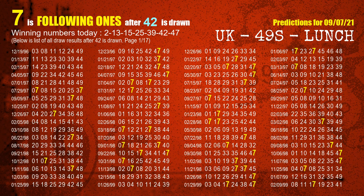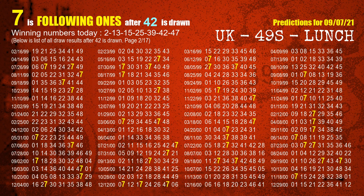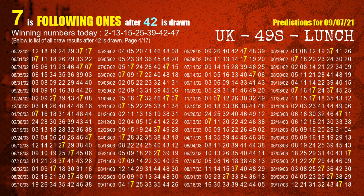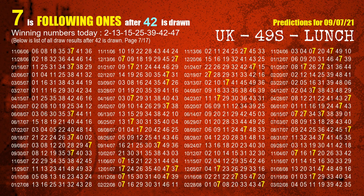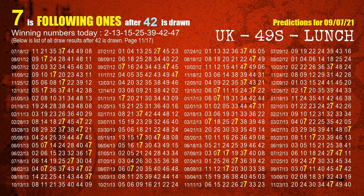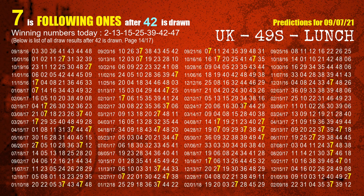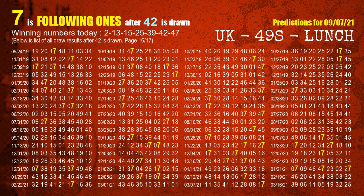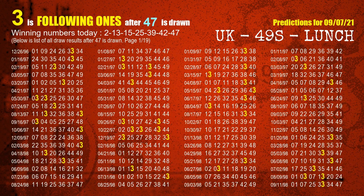The sixth winning number is 42. The most frequently following units digit is 7 when 42 is the winning number in the last draw. The booster winning number is 47. The most frequently following units digit is 3 when 47 is the winning number in the last draw.